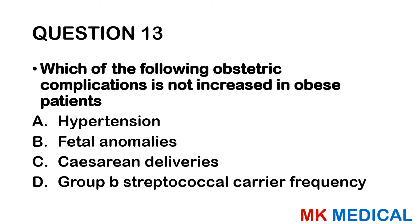Question 47: Infertility caused by chlamydia is due to: A — endometritis. B — oophoritis. C — cervicitis. D — salpingitis. E — peritonitis. If the fallopian tube passage is blocked, the egg cannot be fertilized. Salpingitis affecting the fallopian tube is often the cause of chlamydia-related infertility. The answer is D.